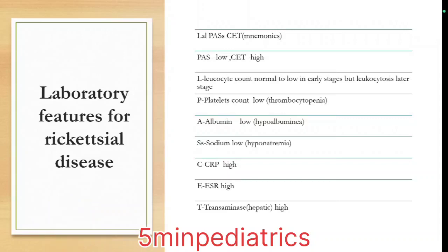The mnemonic is LAL PASs CET. L stands for leukocyte — initially low to normal, but leukocytosis in the later stage of the disease. P is for platelets — low. A is for albumin — low. Ss is for serum sodium — low. C is for CRP — high. E is for ESR — high. T is for transaminases (hepatic) — high. If you see these findings along with a compatible clinical scenario, you must suspect rickettsial disease and send serological tests for confirmation.